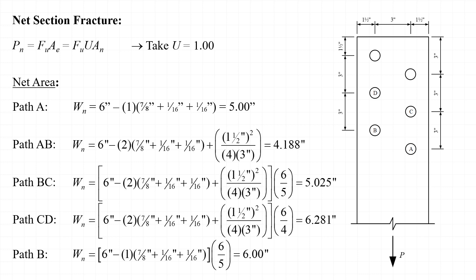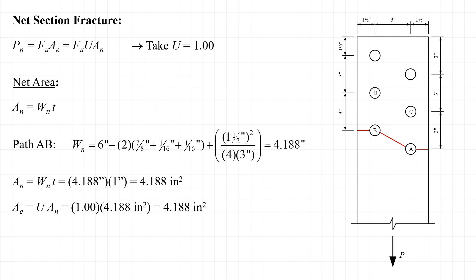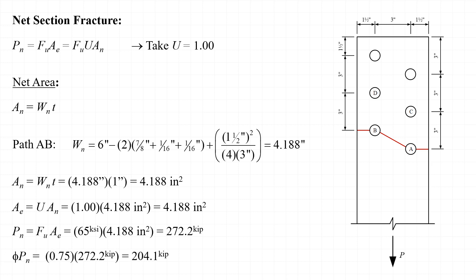Considering all fracture paths, the lowest value of W sub n governs. The path through bolt holes A and B, with W sub n = 4.188 inches, is the critical net section fracture path. The net area A sub n equals 4.188 inches squared. The effective net area A sub e is U times A sub n, also 4.188 inches squared. The nominal strength is 65 ksi times A sub e, giving P sub n = 272.2 kips. Applying a resistance factor of 0.75 for net section fracture, the design strength phi times P sub n equals 204.1 kips.